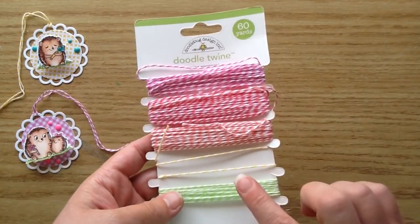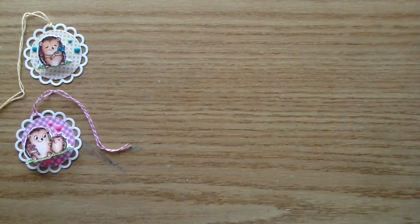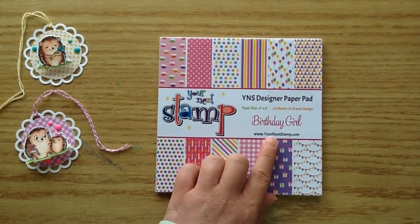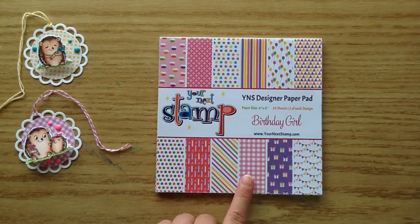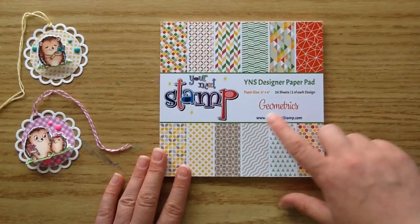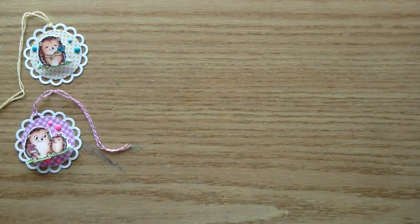And then I use the doodlebug springtime assortment. I use the yellow and pink twine. I use two paper pads from Your Next Stamp. I use the birthday girl for the pink plaid paper here or the gingham paper. And then I also use this paper pad which is the geometrics. I use this yellow diamond pattern here which I thought was nice and summery.